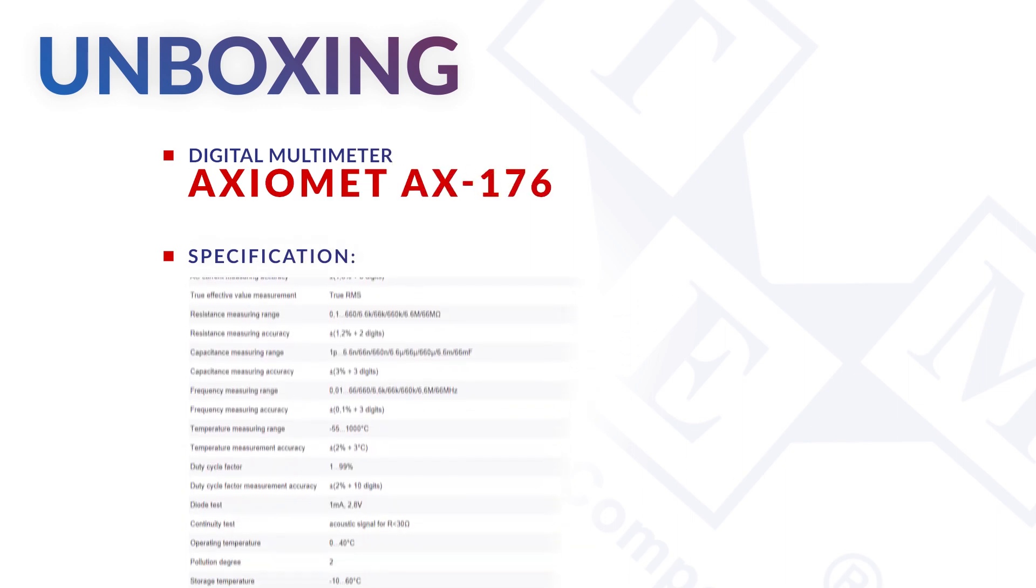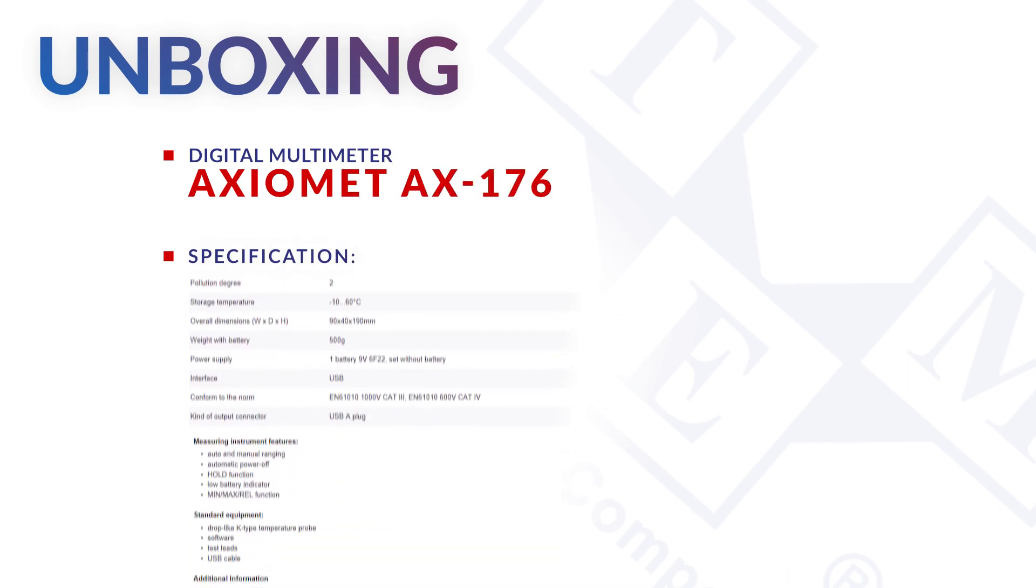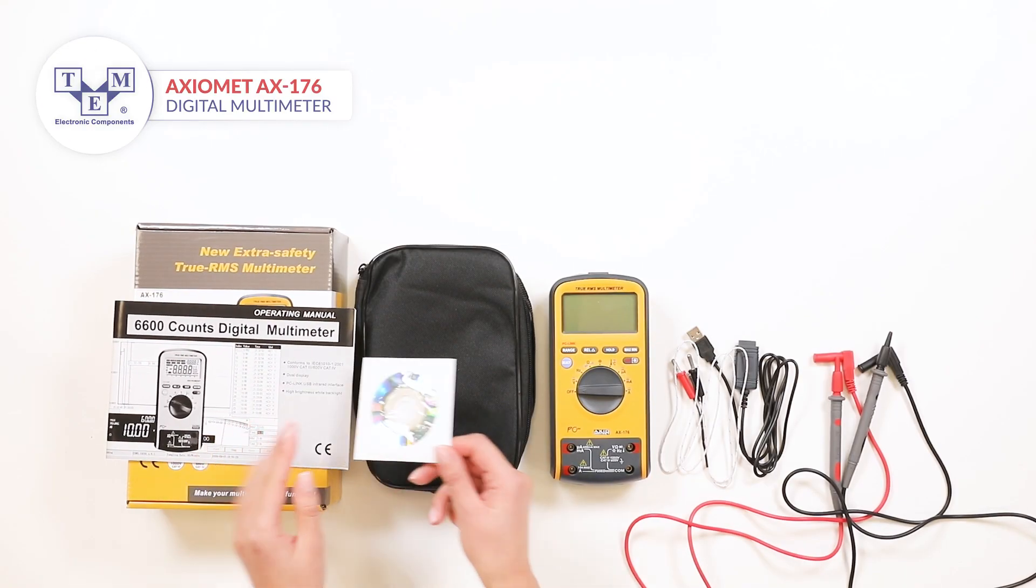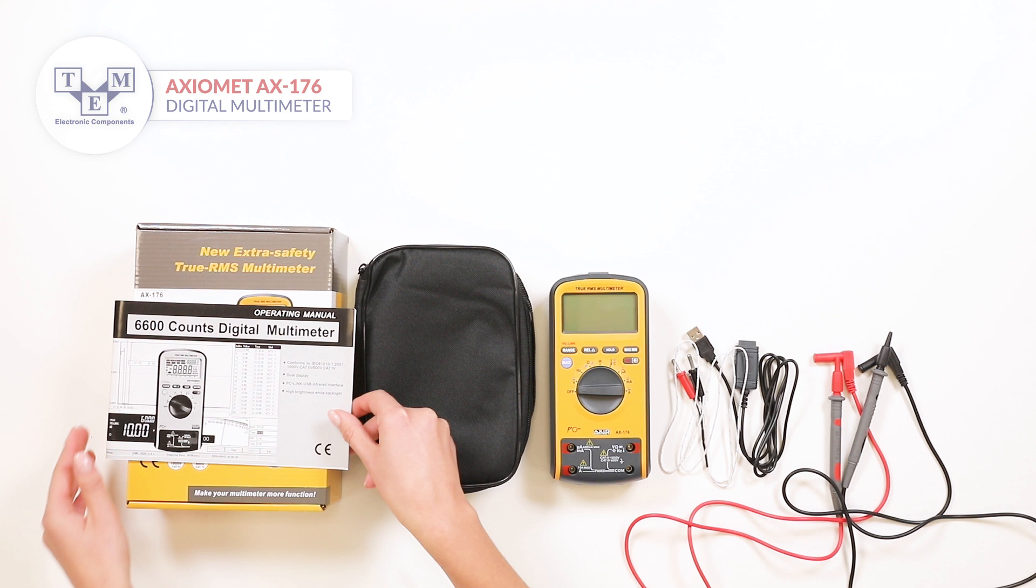The AX176 is a digital true RMS multimeter that measures AC and DC voltages and currents, capacitance, frequency, resistance, temperature, and duty cycle.